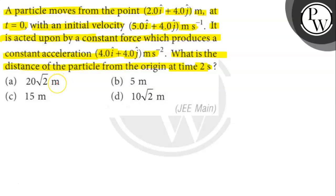We know that the difference of the final position vector and initial position vector will give us the displacement vector. We will get the final position, and its magnitude will give us the required distance.